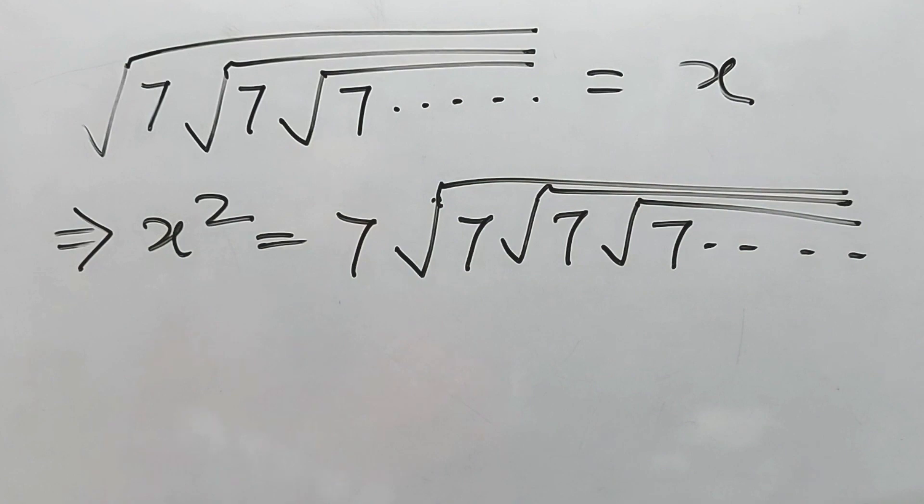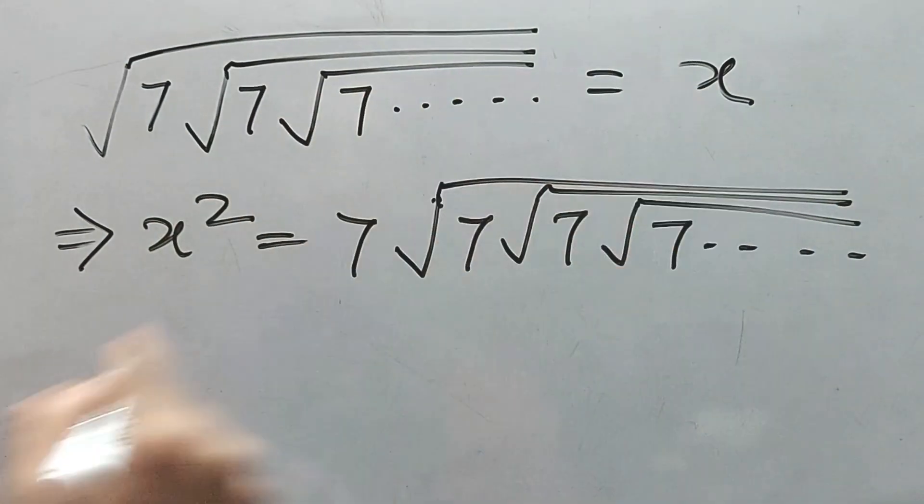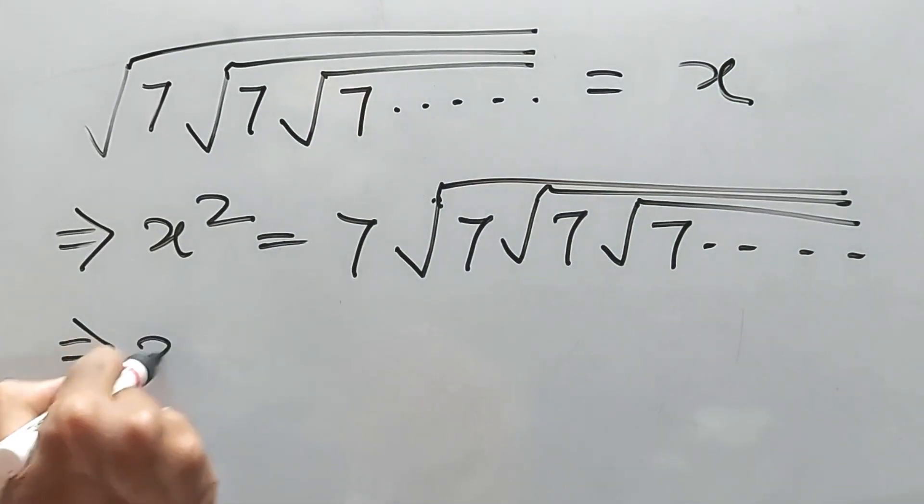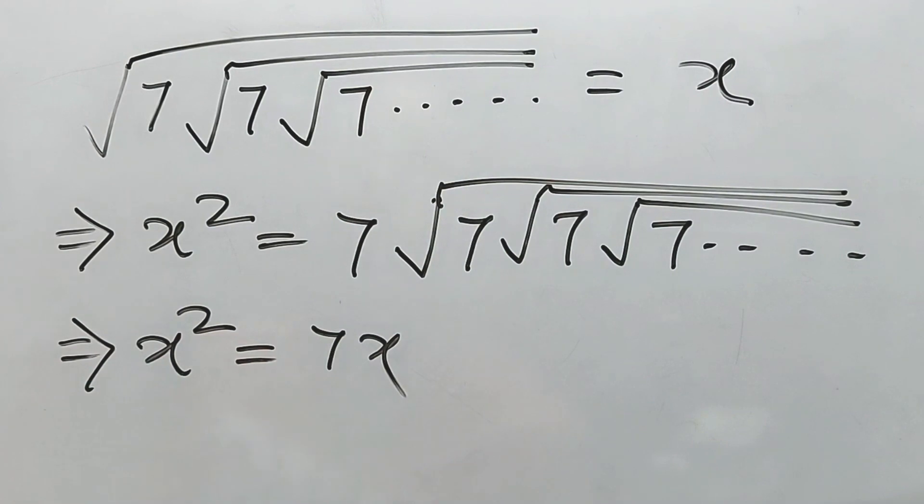Now, this one is equal to x, because it is also up to infinity. This one is also up to infinity. So, x squared is equal to 7x. Simple.